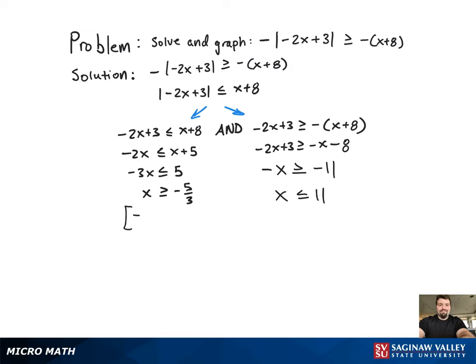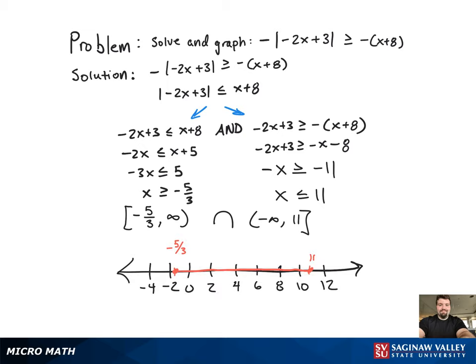Now you have the two solution sets, one from each of the individual inequalities, and that AND statement is going to be an intersection of those two solution sets. And as you can see on the graph provided, that's the solution. Thank you.